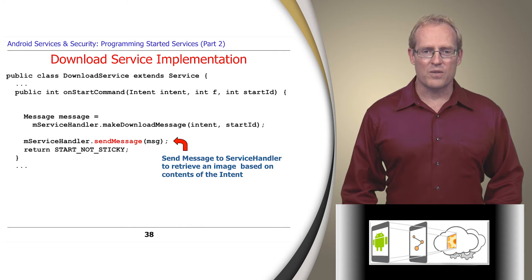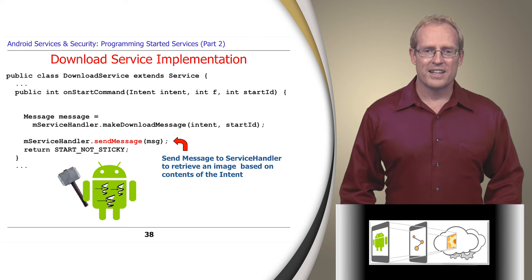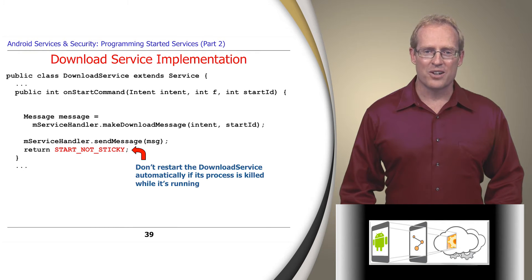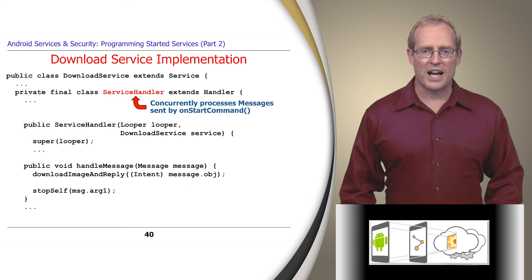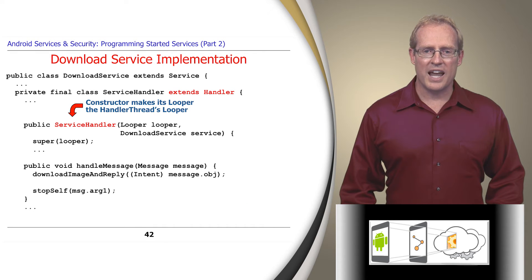OnStartCommand then calls the ServiceHandler's sendMessage method, which uses the Handler framework to pass the message to the ServiceHandler's handleMessage hook method, so it can be processed concurrently in the background handler thread. The value returned from onStartCommand informs the Android Service Framework not to restart the download service automatically if its process is killed while running. The ServiceHandler class extends Handler and does the bulk of the work for the download service by concurrently processing messages passed to it via the Handler framework. Its constructor gets the handler thread's looper and assigns it, so it will receive messages forwarded from onStartCommand via sendMessage.